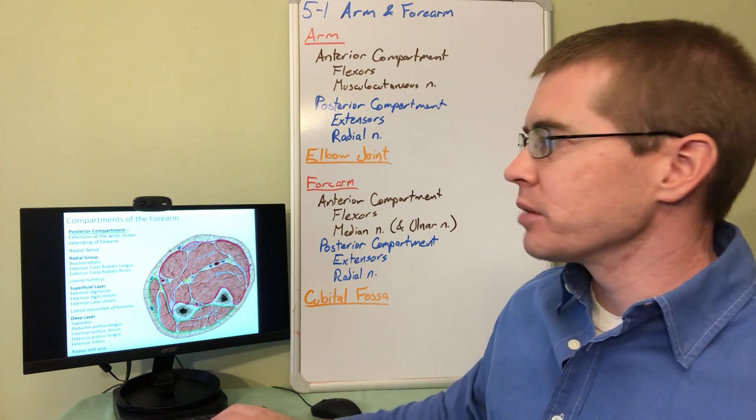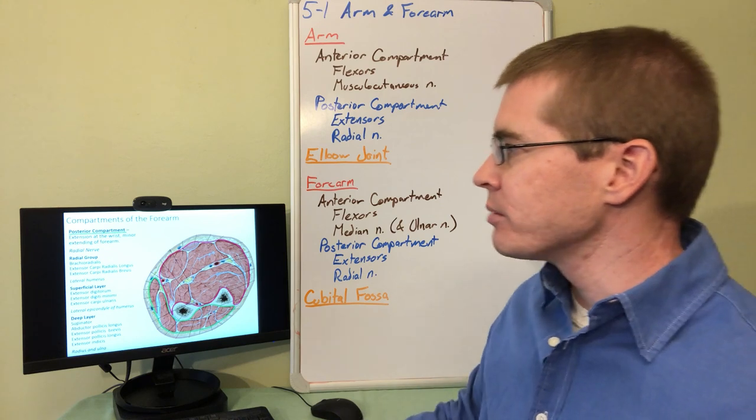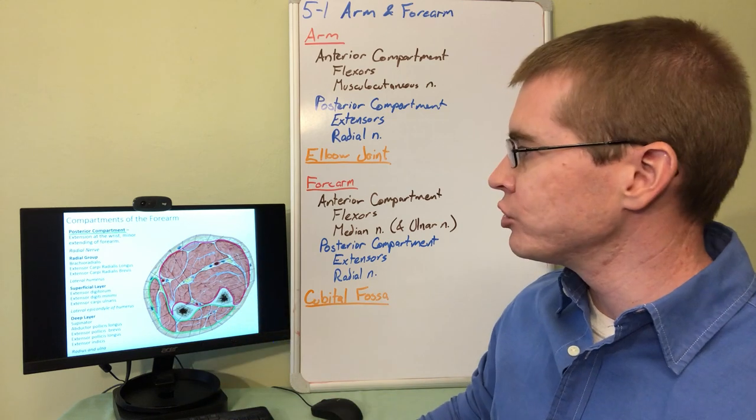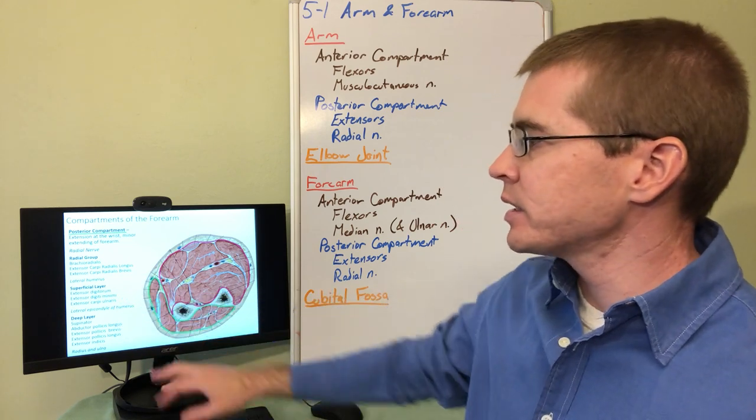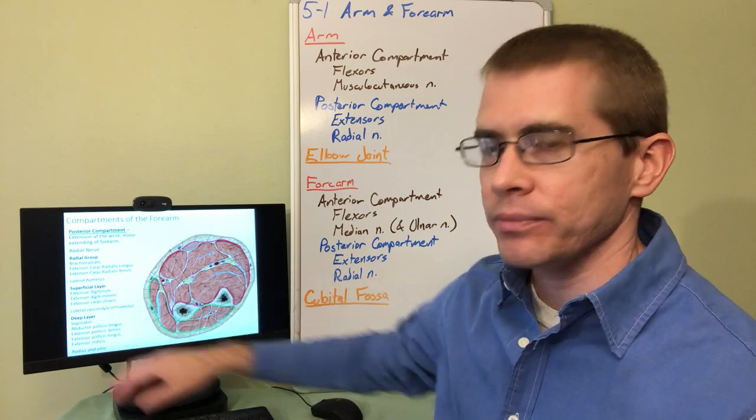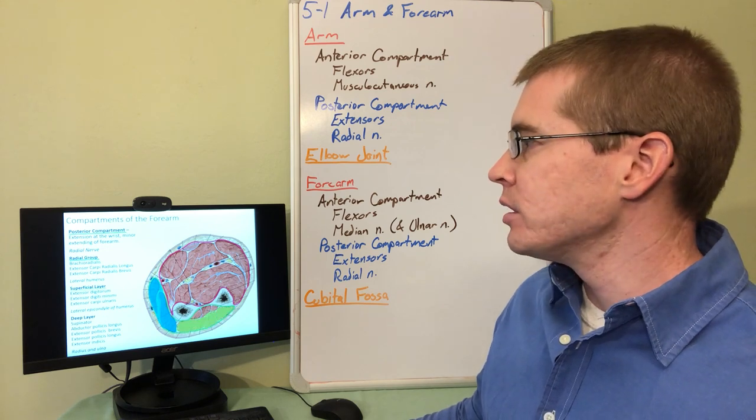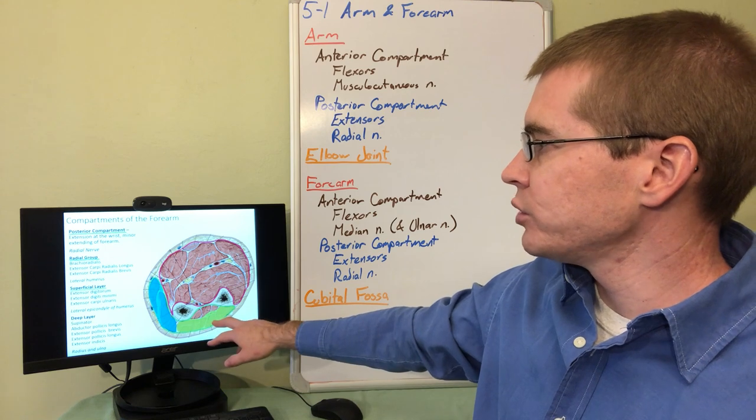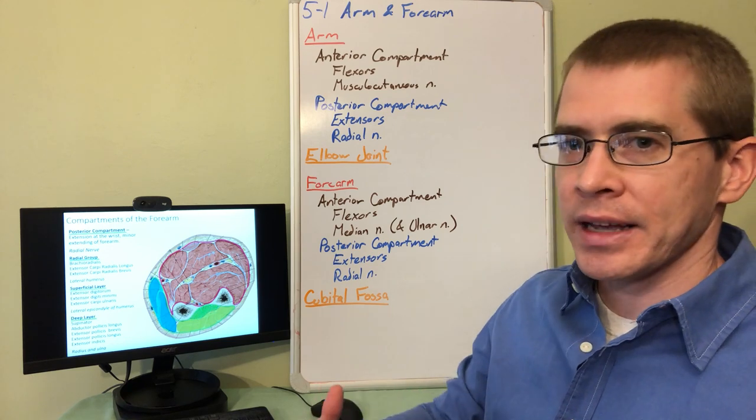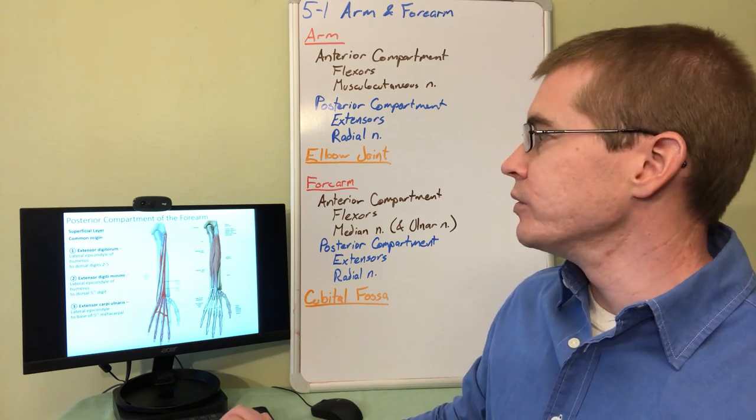So now let's take a look at the posterior compartment of the forearm. All of these without exception are innervated by the radial nerve. The radial nerve is the only nerve that's running through the posterior compartment of the forearm. These are all extensors and again I'm separating them up into individual compartments and in this case the compartments are based on their location as well as their attachment point. So you can take a look at that and group those mentally. The radial group is the most lateral those are all attaching to the lateral humerus on the superficial layer of the posterior compartment attaching to the lateral epicondyle humerus and then the deeper layer is again attaching near that interosseous membrane.